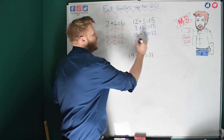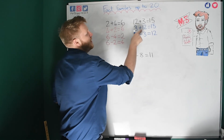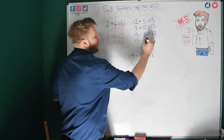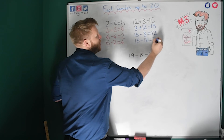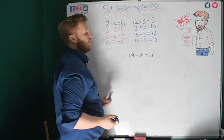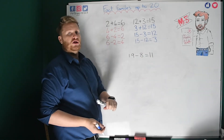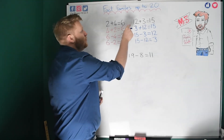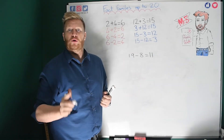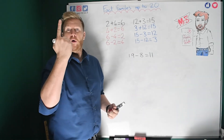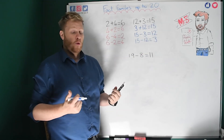Let's do another take-away: 15 take away 12 leaves me with 3. Brilliant! So if someone says write your fact family, you can work out 1 sum and you already know all 4 answers — you don't have to keep working them all out.